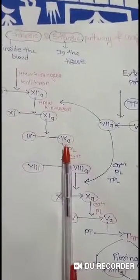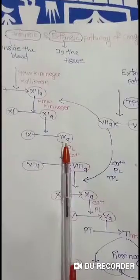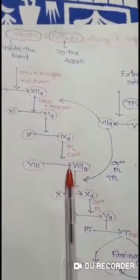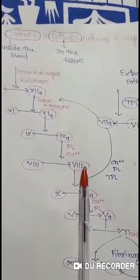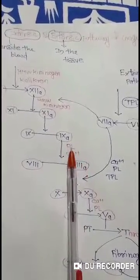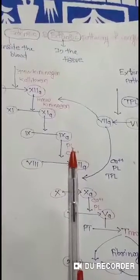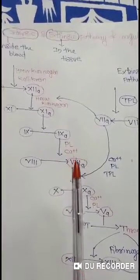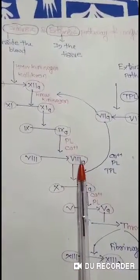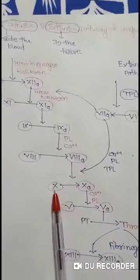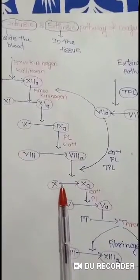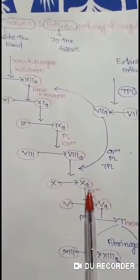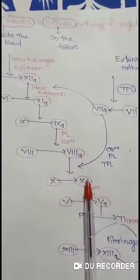This Activated Factor Number 9 converts Factor Number 8 to Activated Factor Number 8, with the help of Phospholipase Enzyme and Calcium ions. This Activated Factor Number 8 then converts Factor Number 10 to Activated Factor Number 10.